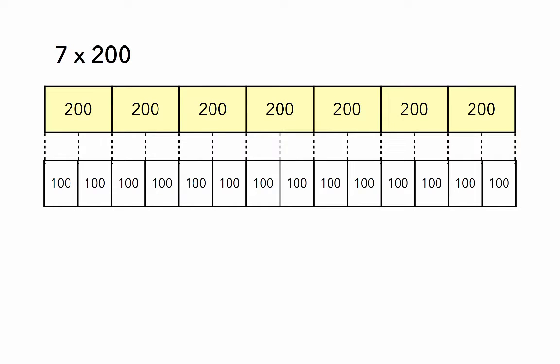Now let's break it into easier to multiply pieces. 100 goes into 200 twice. There are 14 groups of 100.